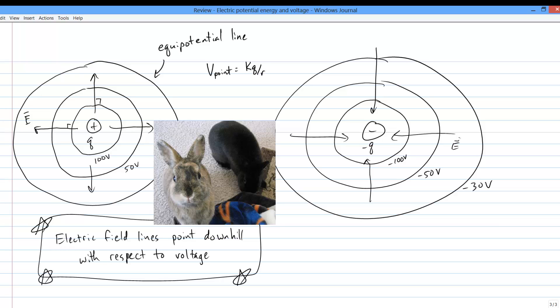Finally, like so many other things, voltage obeys superposition. The net voltage at any point in space is the sum of any individual voltages.